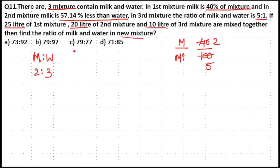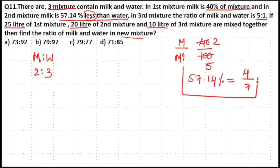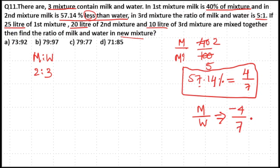In the second mixture, milk is 57.14% less than water. The negative symbol applies here since milk is less than water. Remember that 57.14% equals the fraction 4/7. So milk is 4/7 less than water. If water is 7 parts, milk will be 7 minus 4 equals 3 parts. Therefore, the milk to water ratio in the second mixture is 3:7.